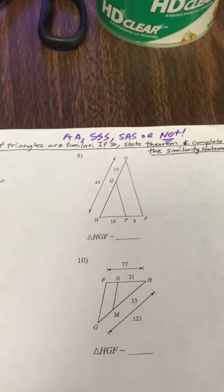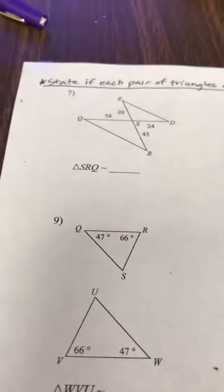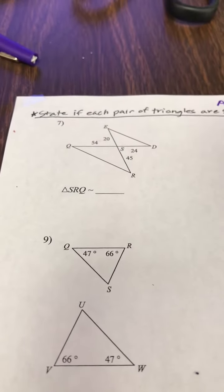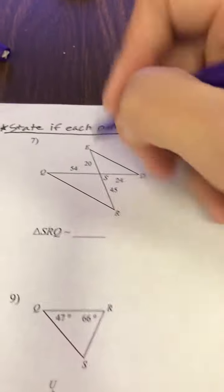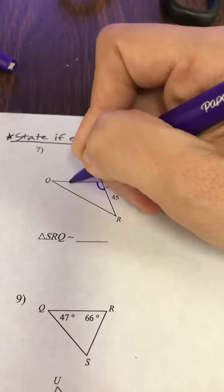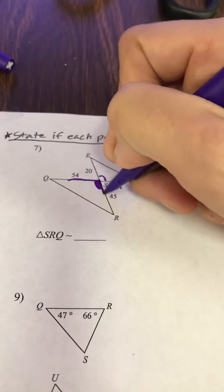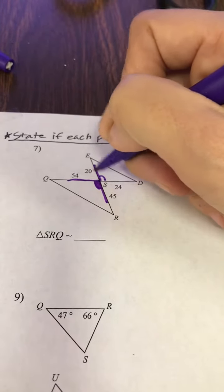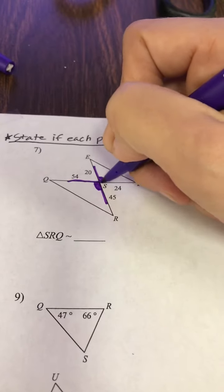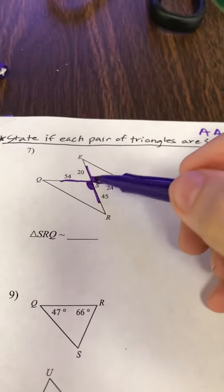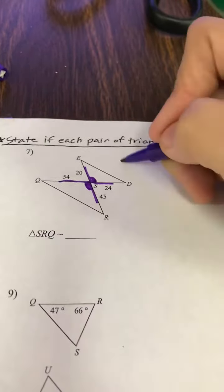This was like our homework last time, also like the Kahoot. AA, SSS, SAS, or not. So let's take a look. This is looking like maybe it's SAS because I have a side that I know about, an angle, and a side. A side that I know about, 20, an angle, and a side.